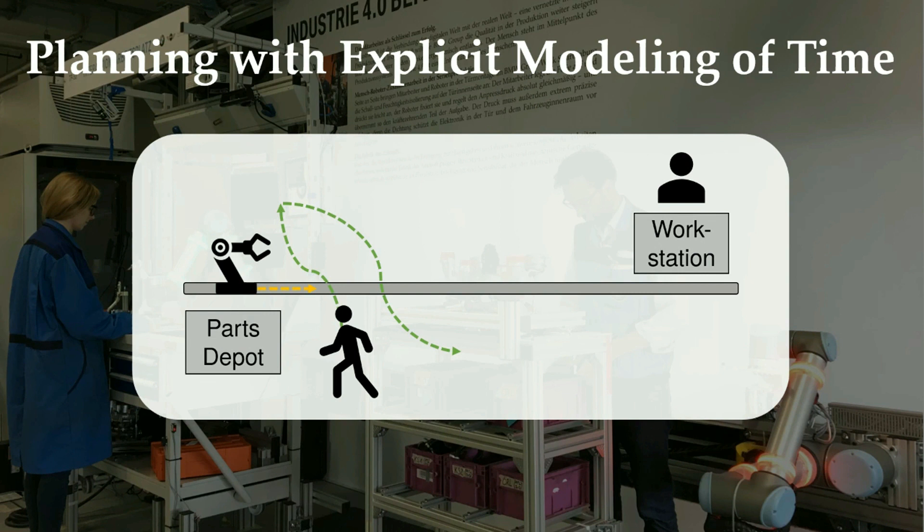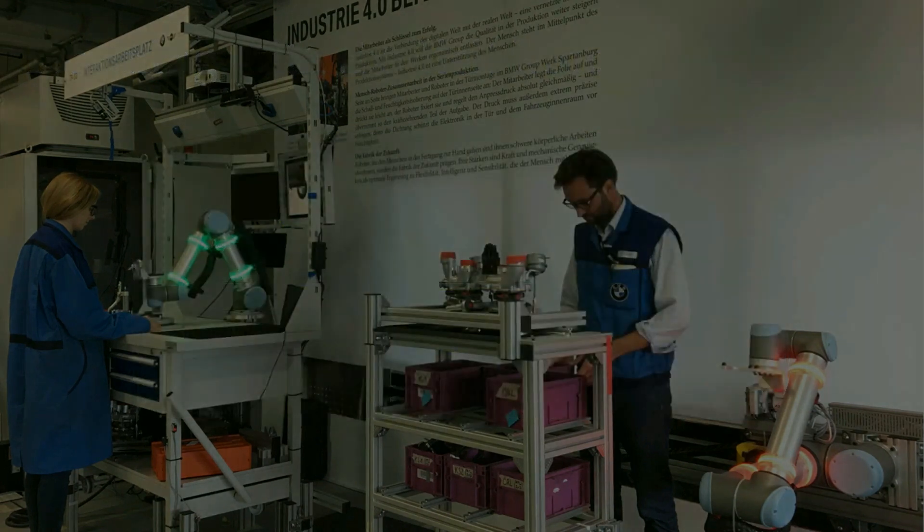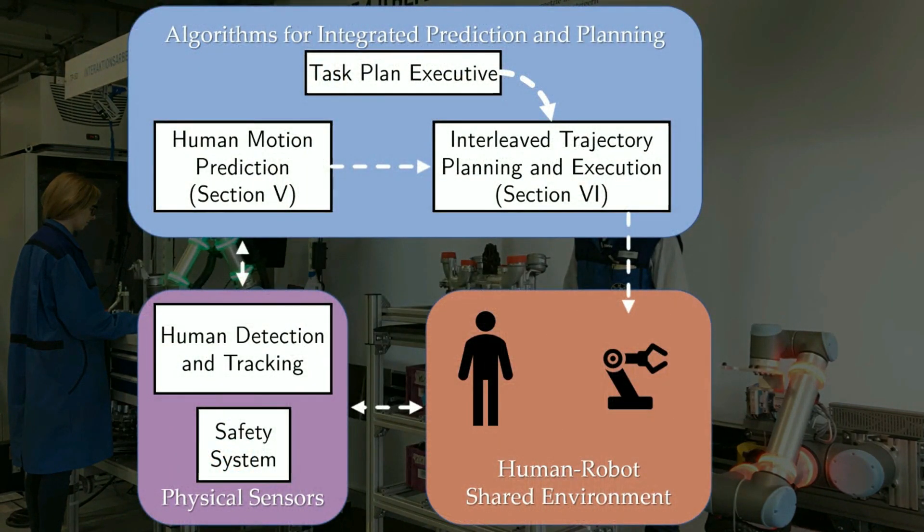By representing time, the robot can autonomously decide when to wait, yield, and adapt to humans. We use a UR-10 robot mounted on an industrial linear axis unit to implement our system.